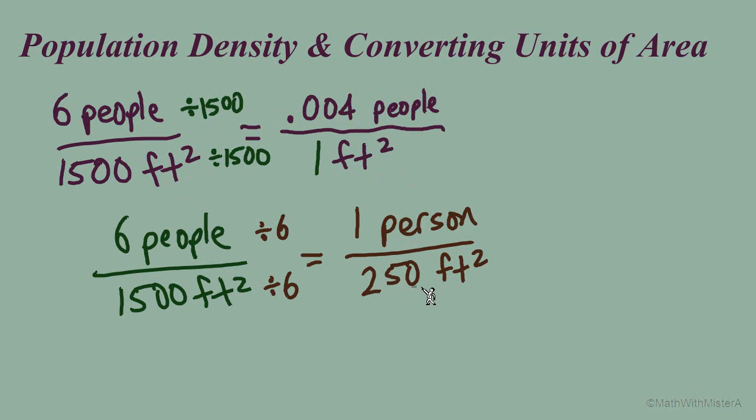For each person, 250 square feet, and that equates to a density of 0.004 or 4 one thousandths people per every square foot.